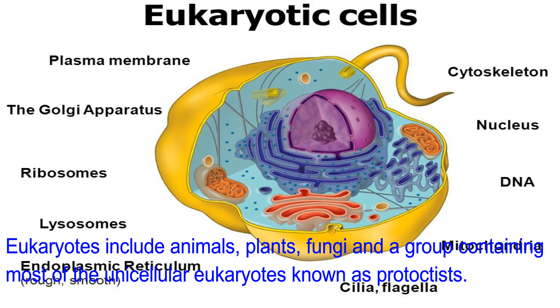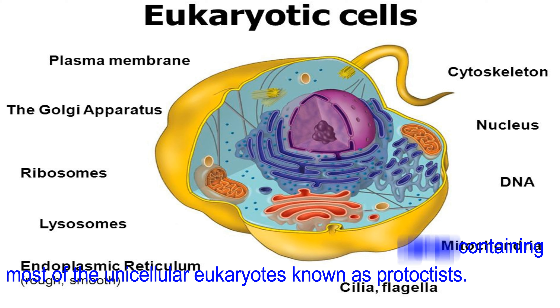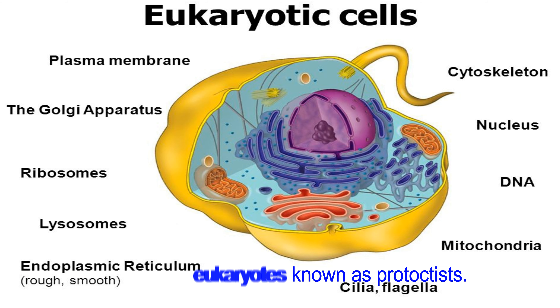Eukaryotes include animals, plants, fungi, and a group containing most of the unicellular eukaryotes known as protoctists. You must remember protoctists.